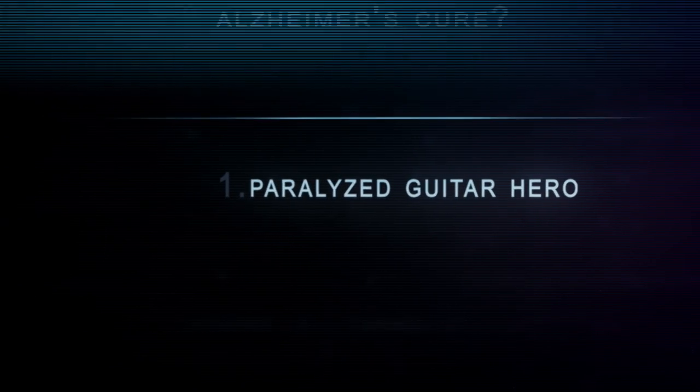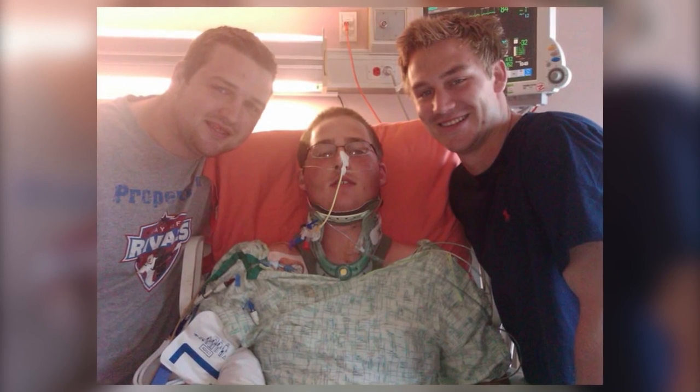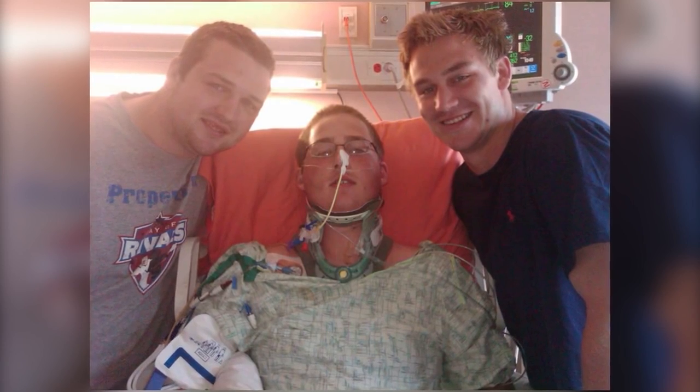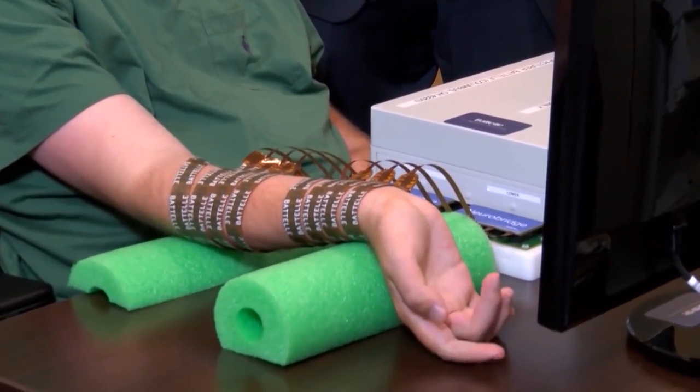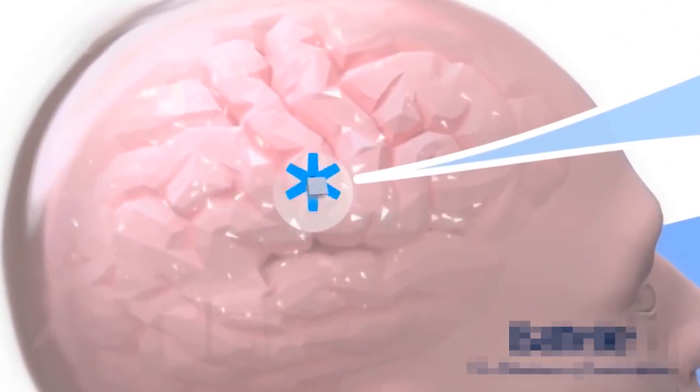Paralyzed Man Plays Guitar Hero. Ian Burkhart's arms and legs were paralyzed in a terrible accident six years ago, but today he is able to move his fingers, thanks to a revolutionary computer chip implanted directly into his brain.